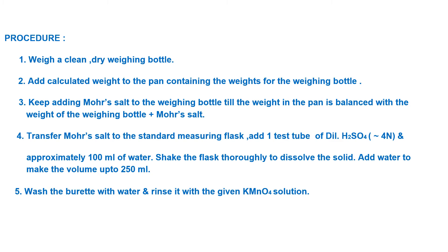Transfer the weighed salt to the standard measuring flask, which has a long neck. Add one test tube of dilute sulfuric acid to it so that the Mohr salt does not get hydrolyzed. Add approximately 100 ml of water to allow space for shaking and mixing the contents properly. After mixing, make the volume up to 250 ml using the mark on the neck of the measuring flask. Do not make it 250 ml at the start — add less water first, mix, then dilute to 250 ml.